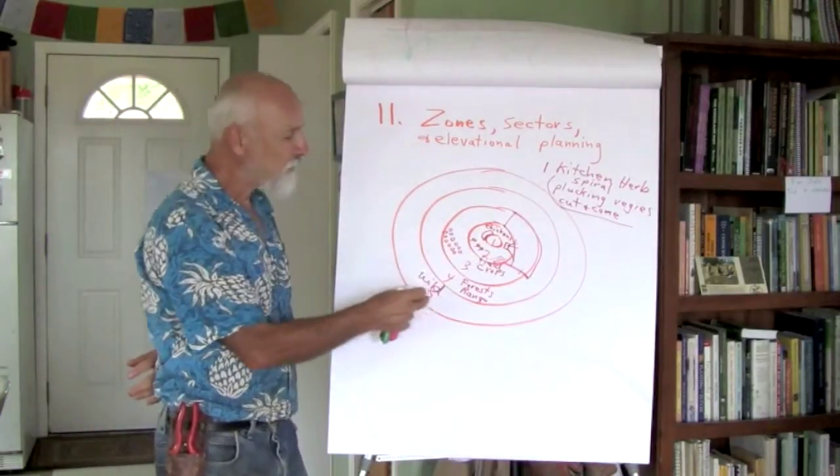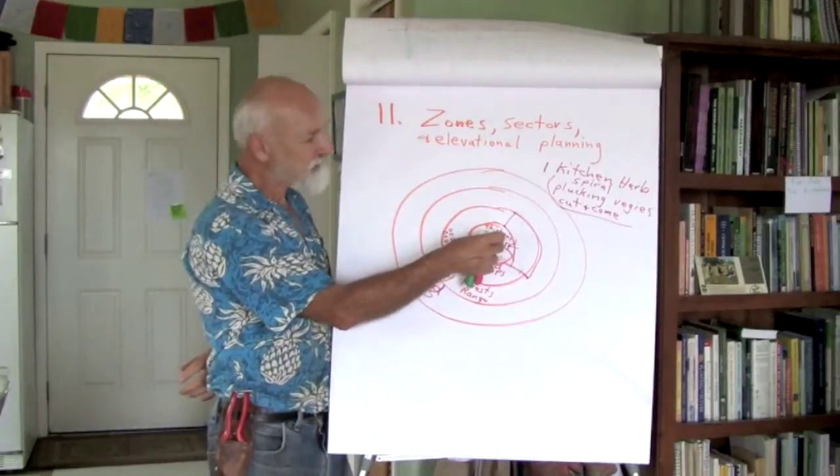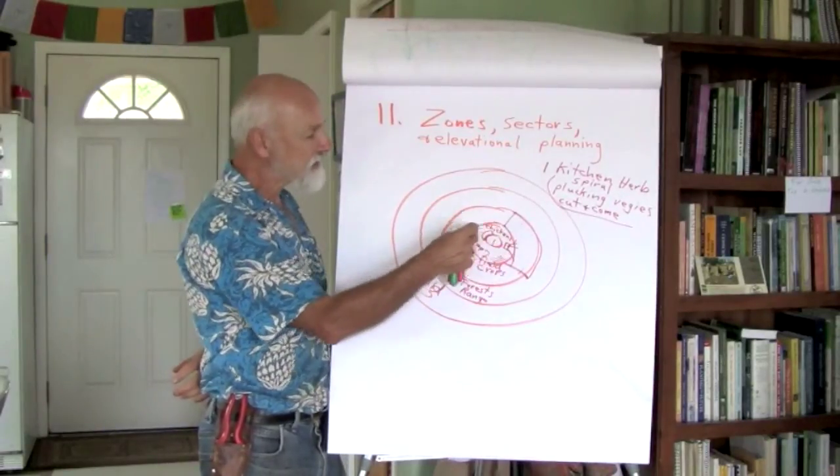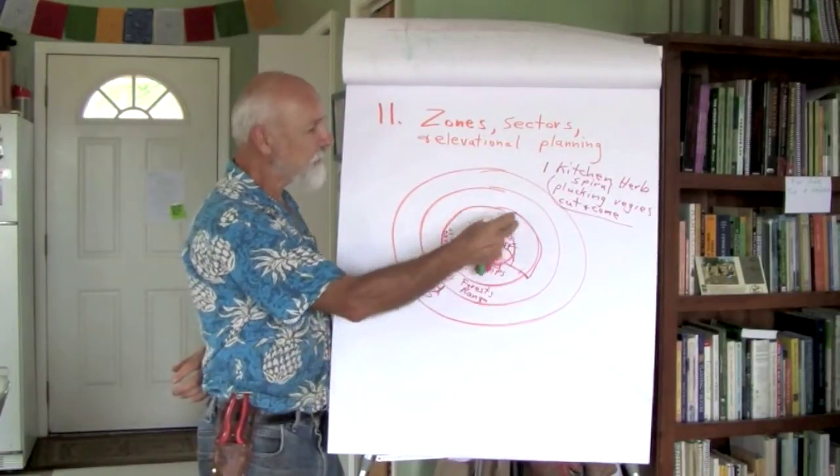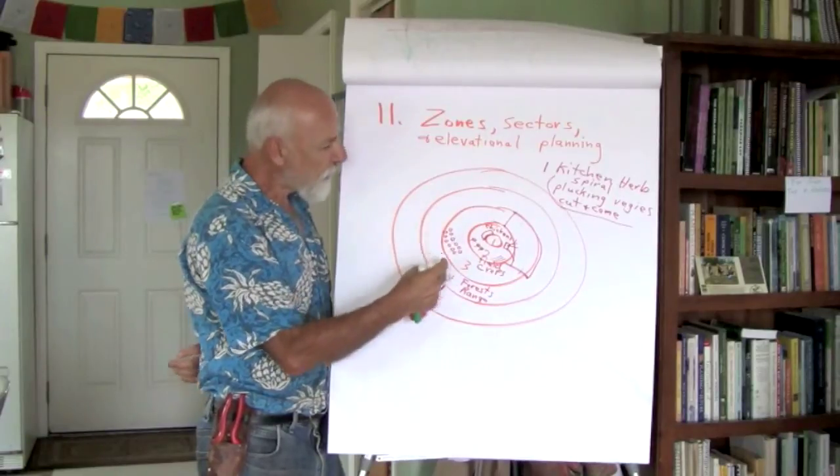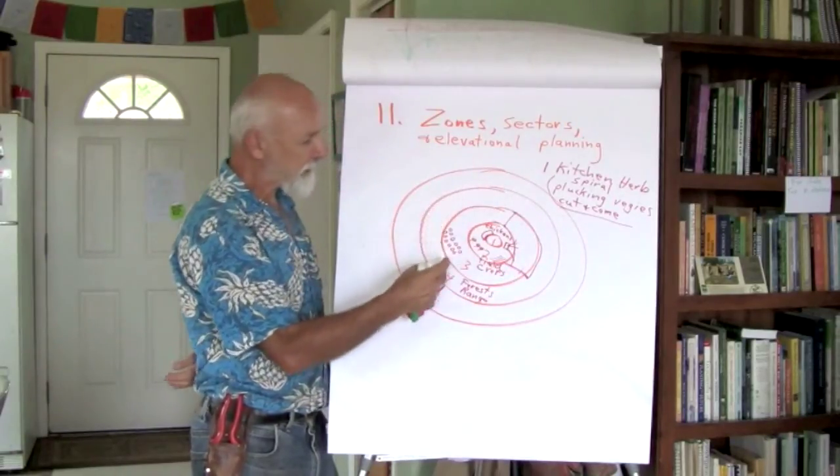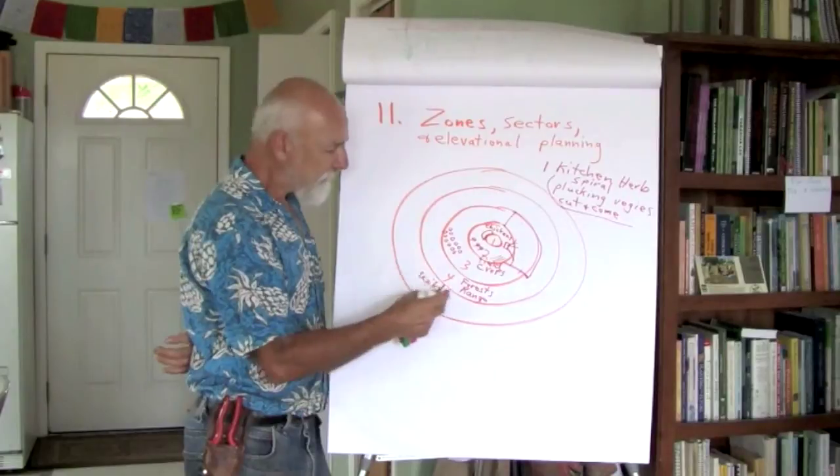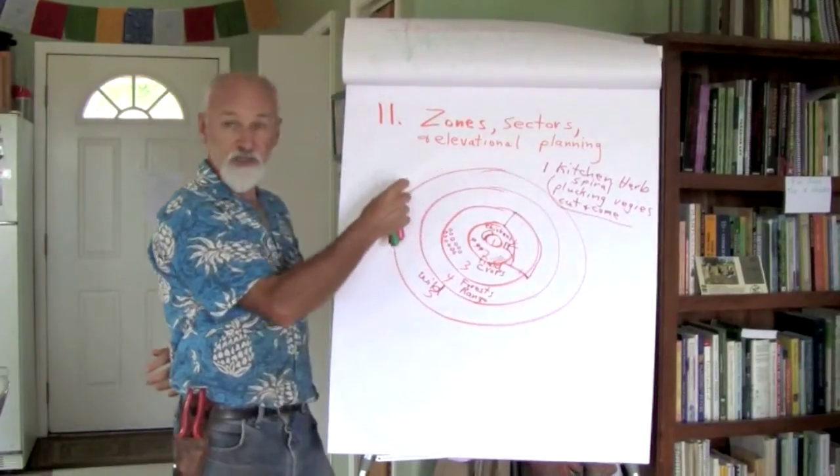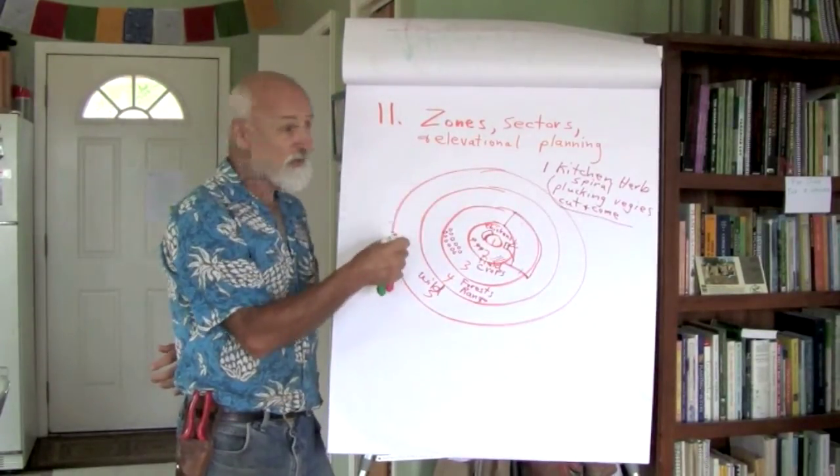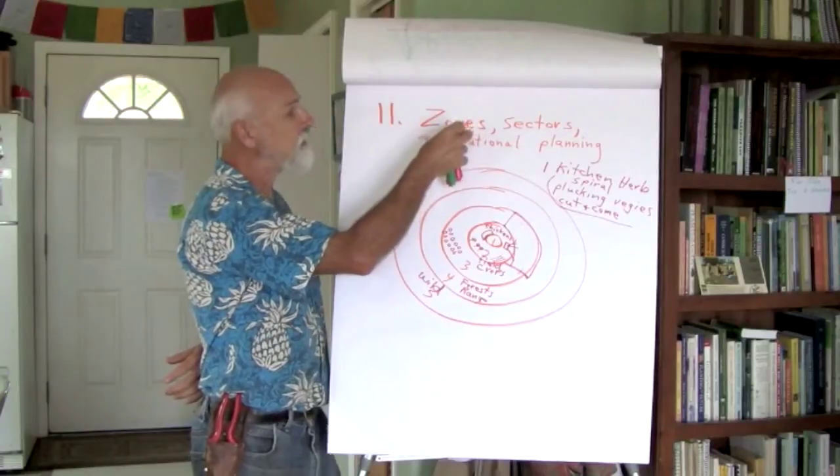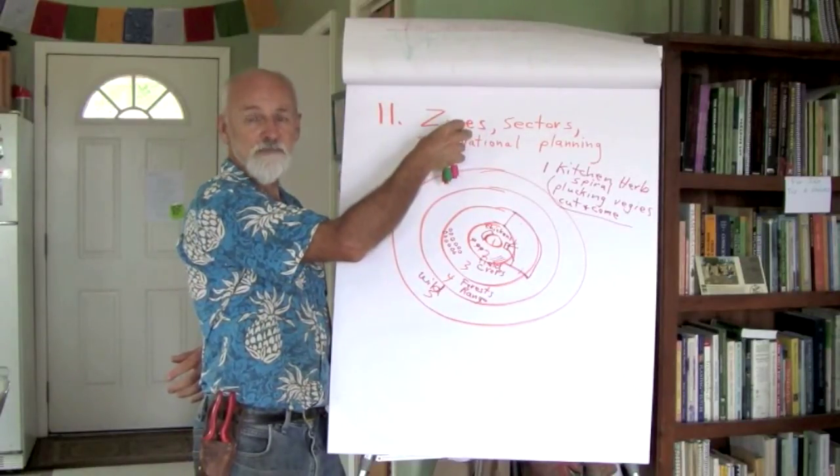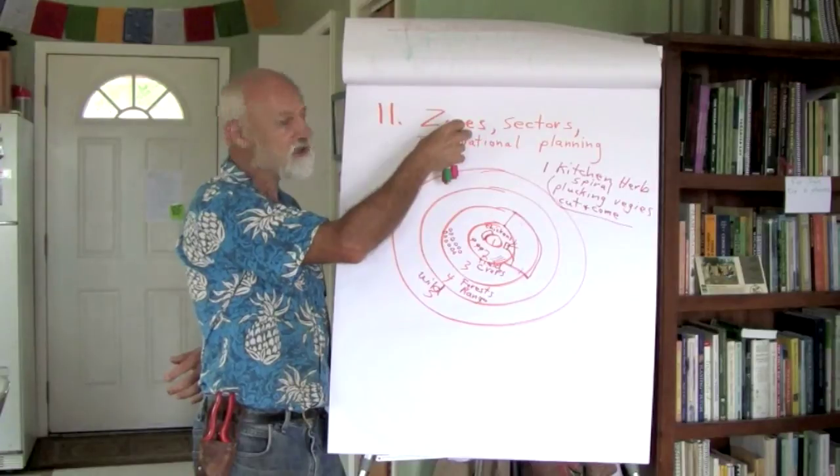The zone theory can also be applied to cities, your intensely packed inner city, your residential districts, your suburbs, the agricultural land in the peri-urban area, and then back beyond that, the forest and the wild. So the zone theory can be applied to just about any spatial system.